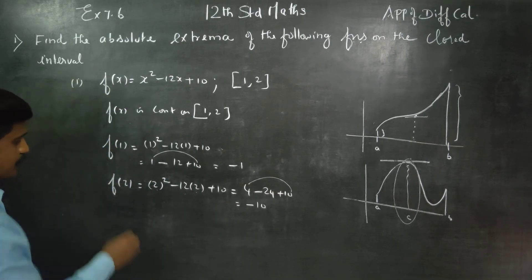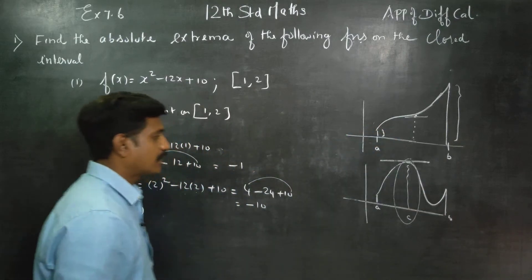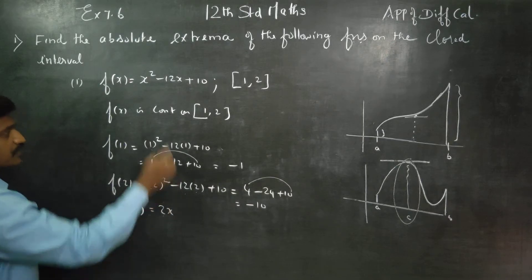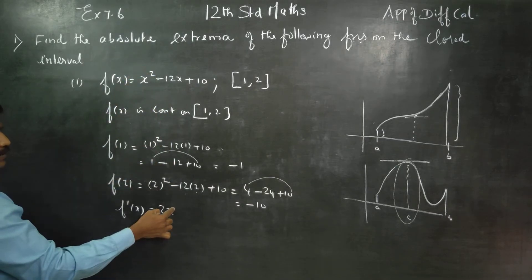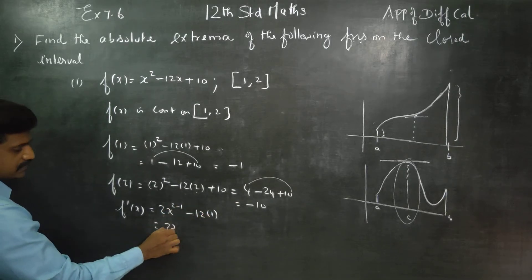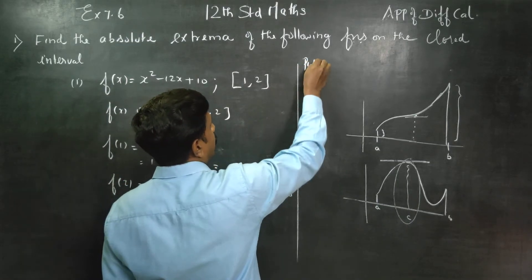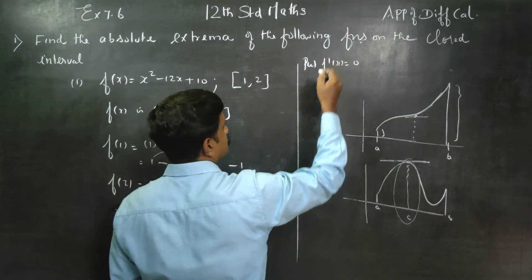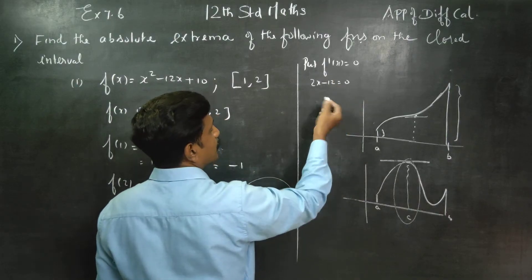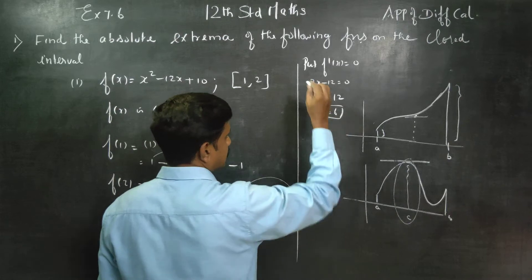Next, differentiate to find the turning point. f dash x equals 2x minus 12. Put f dash x equal to 0. That is, 2x minus 12 equals 0. Then 2x equals 12, so x equals 6.